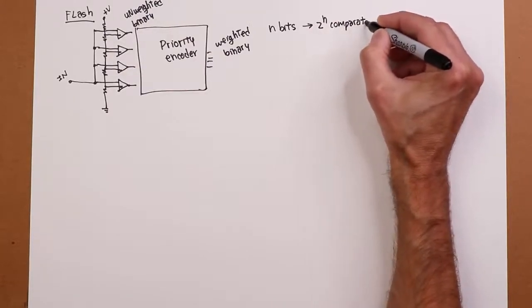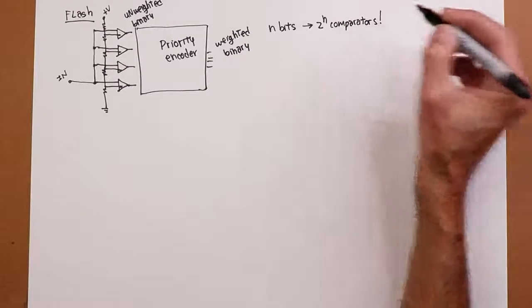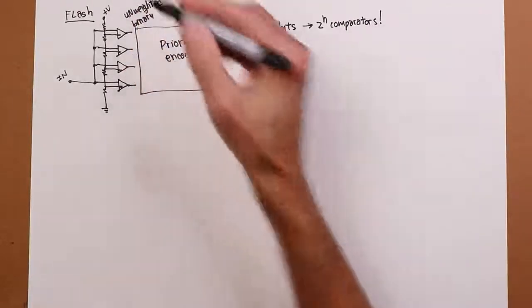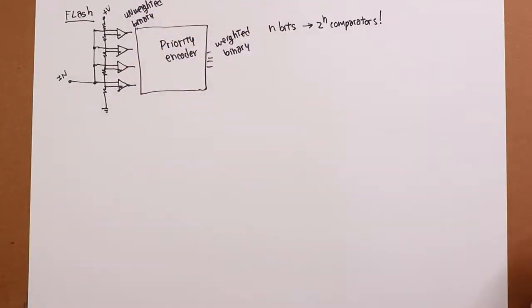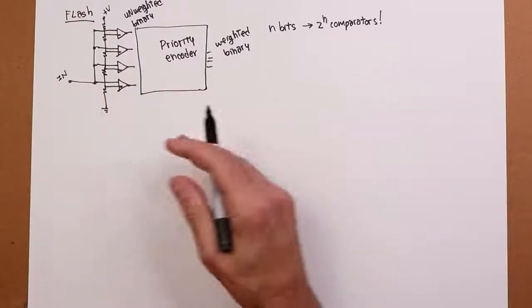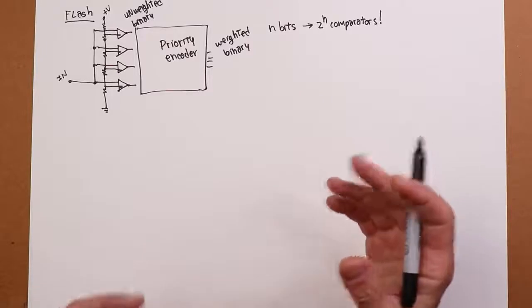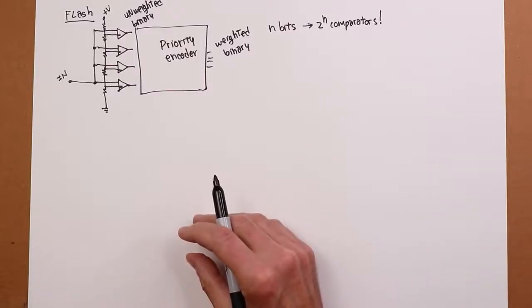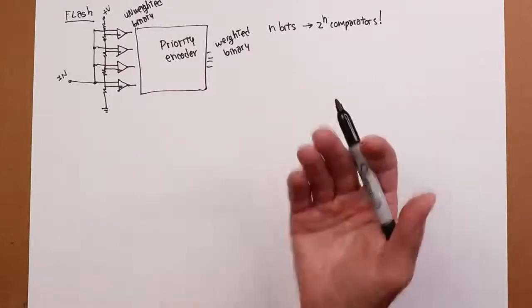Yeah, so for 8 bits, that's 256 comparators. That's a lot of comparators. And 8 bits is not super high resolution by any stretch of the imagination. So yeah, it's extraordinarily fast, but it becomes unwieldy if you have large resolution.